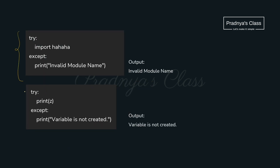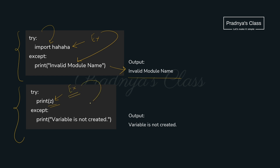Here are some more examples of exception handling. We are trying to import an invalid module name, so we wrote this statement in the try block. When the exception raises, we come to the except block — here is the output. In this case, we are trying to access a variable without creating it, that's why the exception gets fired. When the exception raises, we come to the except block where we are printing the message, and that message gets printed on the screen.